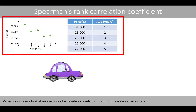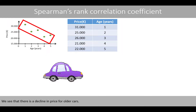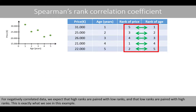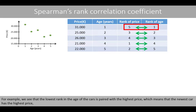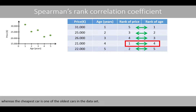We'll now have a look at an example of a negative correlation from our previous car sales data. We see that there is a decline in price for older cars. For negatively correlated data, we expect that high ranks are paired with low ranks, and that low ranks are paired with high ranks. This is exactly what we see in this example. The lowest rank in the age of the cars is paired with the highest price, which means that the newest car has the highest price, whereas the cheapest car is one of the oldest cars in the dataset.